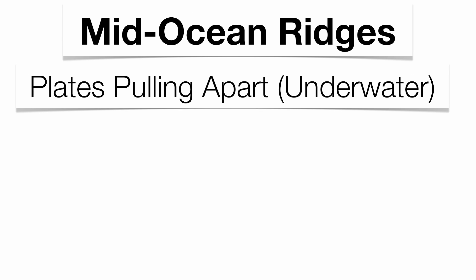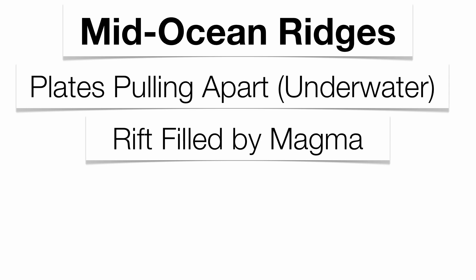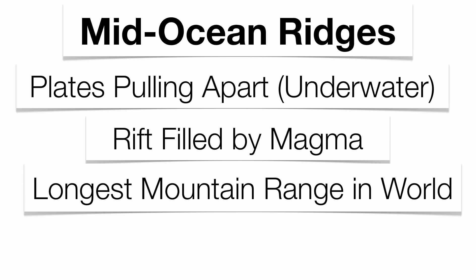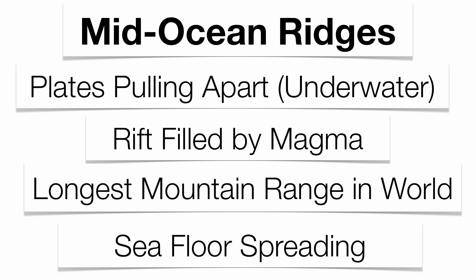If we first start off with mid-ocean ridges, these are basically found underwater — your plates are pulling apart underwater. Where the crack in the ground is found, that's where your rift is going to be filled with magma, and that's where your youngest rock is going to be found. This is the longest continuous mountain range on the planet, almost acting like seams on a baseball as they go around the planet. Because the majority of these are found underwater, the plates underwater are getting bigger — scientists call this seafloor spreading.